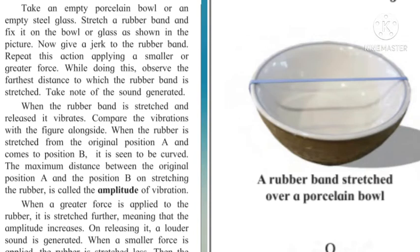Take an empty porcelain bowl or an empty steel glass. Stretch a rubber band and fix it on the bowl or glass as shown in the picture. Now give a jerk to the rubber band. Repeat this action applying a smaller or greater force. While doing this, observe the farthest distance to which the rubber band is stretched. Take note of the sound generated. When the rubber band is stretched and released, it vibrates. Compare the vibrations with the figure alongside. When the rubber is stretched from the original position A and comes to position B, it is seen to be curved.